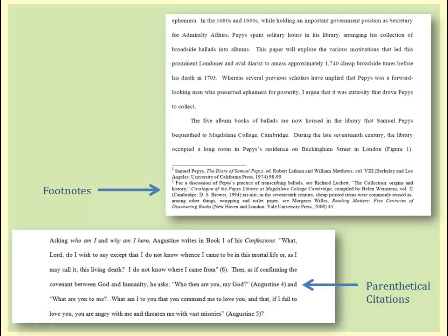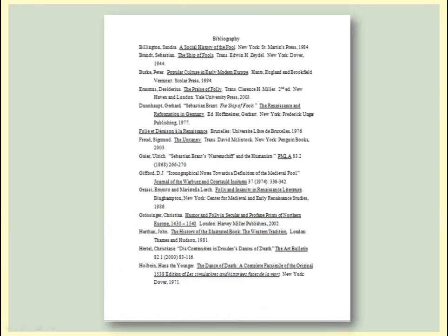Parenthetical references, footnotes or endnotes, inform your reader of the sources that you consulted throughout your paper. A bibliography, which is also called a works cited or a list of references, is a list of your sources included at the end of your paper.